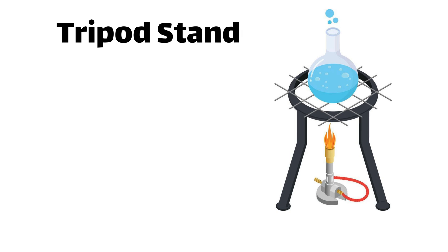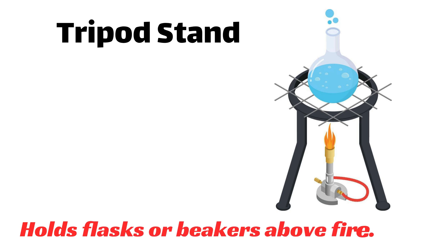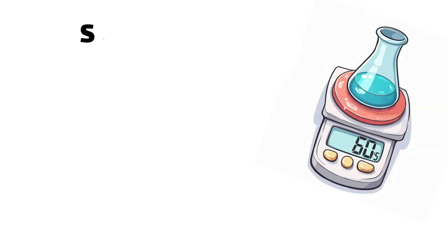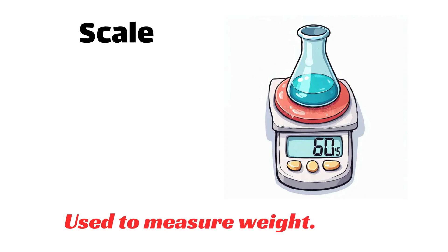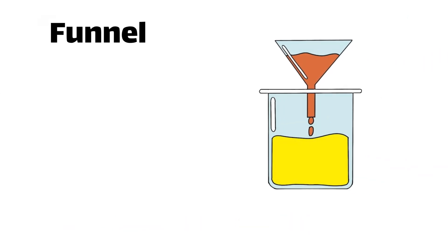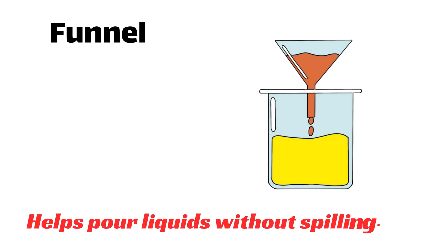Tripod stand — holds flasks or beakers above fire. Scale — used to measure weight. Funnel — helps pour liquids without spilling.